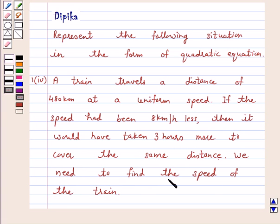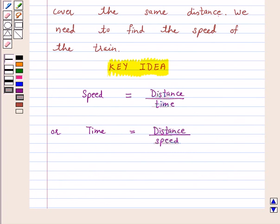We need to find the speed of the train. We know that speed is equal to distance upon time, or time is equal to distance upon speed. This is the key idea behind this question. We will use this formula to solve this question. Let's start the solution.